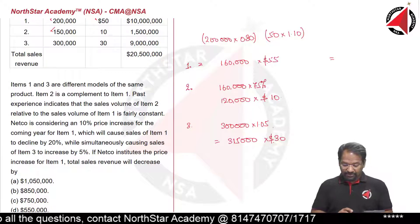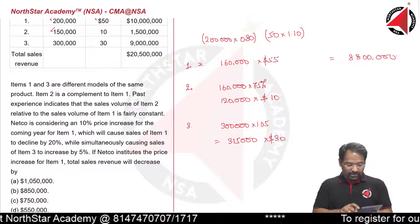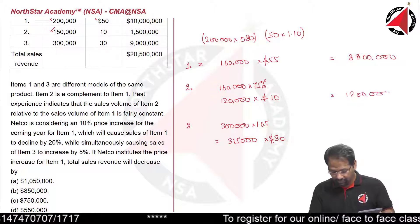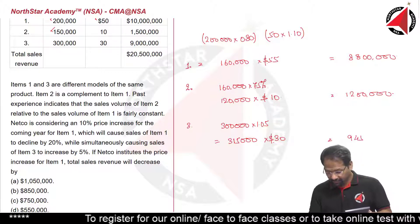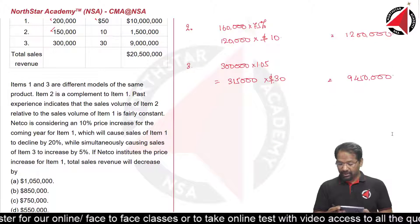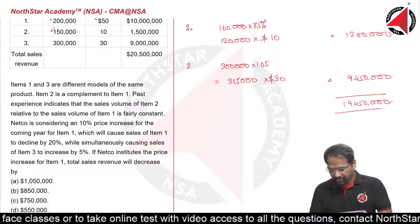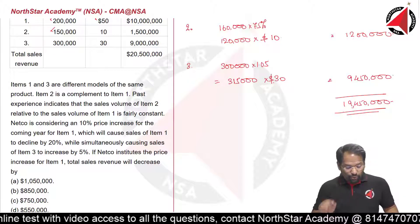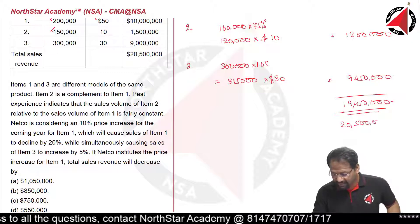Now let's calculate the new total sales revenue: Item 1 — 160,000 multiplied by $55; Item 2 — 120,000 multiplied by $10; Item 3 — 315,000 multiplied by $30. Adding these together gives a total of $19,450,000 — that is, 19 million four hundred and fifty thousand dollars.